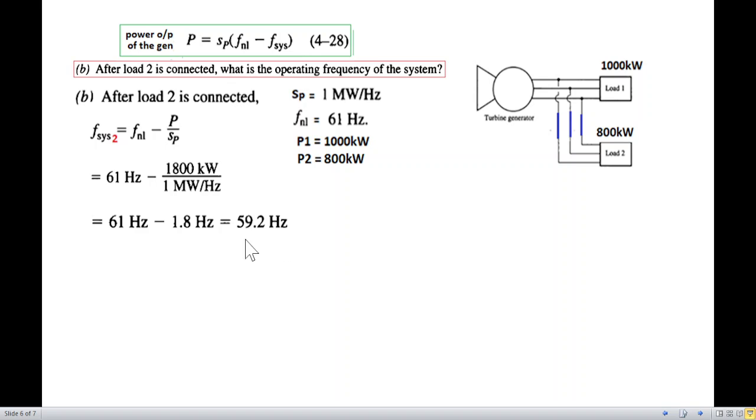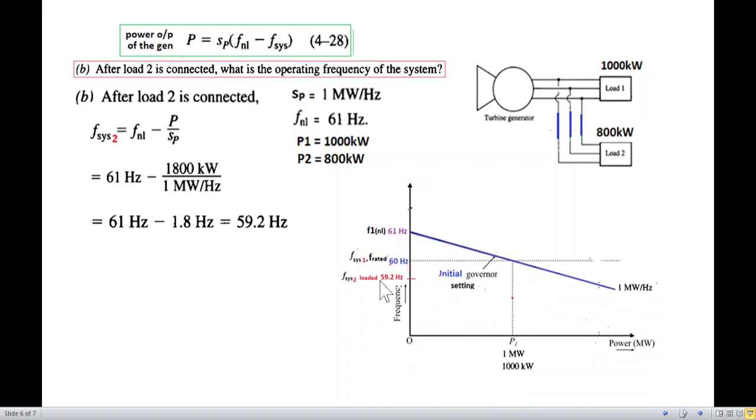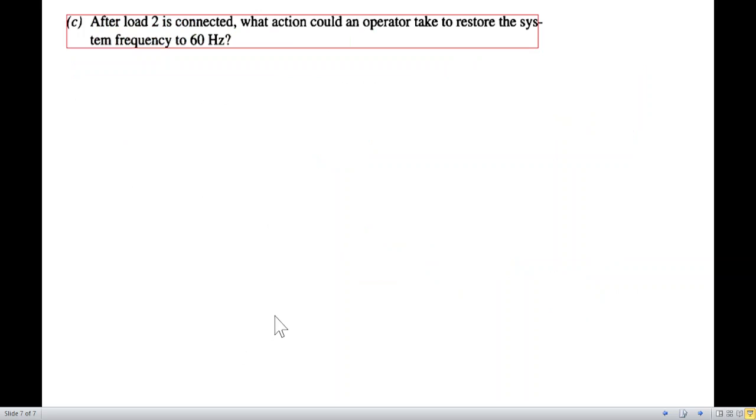And this drop is not acceptable. It should be very near to 60, about one or two percent variation is acceptable. So we have to do some things to adjust this frequency. Now let's see how it looks in the graph. We were up to this point. Now the new frequency, because of the added load, has come down. It is now at 59.2. So it has dropped by 0.8 percent.